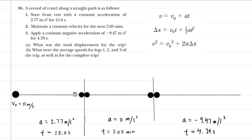In this question, we have an object that is moving along three separate segments of its motion. The question describes those three segments, and we've drawn a picture that represents that information.